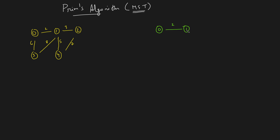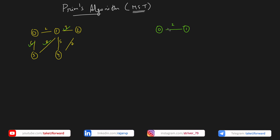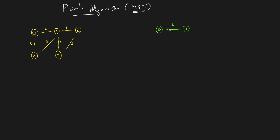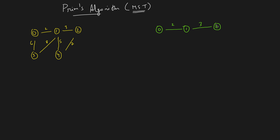The next step says: check among all the adjacent edges of both nodes. So we check all four edges connected to these two nodes. Among all adjacent edges, you find the minimal one and connect it. After this, you again check which is the minimum edge weight connected to all these nodes. Out of all four edges, you pick the minimal one — the one with edge weight 5.